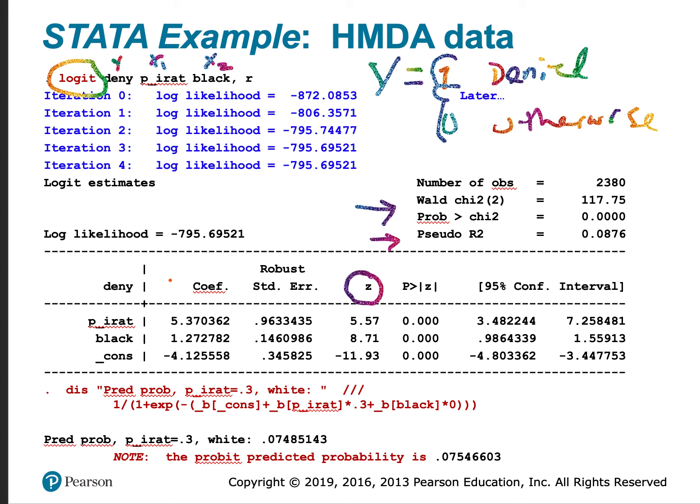Let's focus on interpreting the coefficients. So the positive coefficients mean that an increase in this variable increases the probability of denial. Now let's carry out a quantitative interpretation of the coefficient.